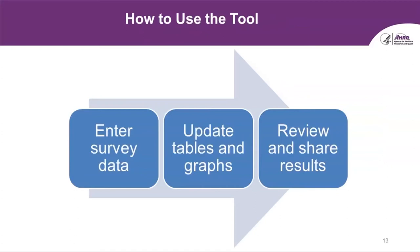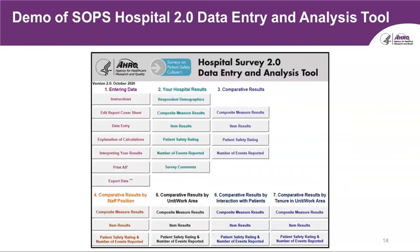So how do you use the tool? It's pretty easy. First, you're going to enter your survey data, then click on a button for updating tables and graphs, and then review and share your results. Today I'm going to demonstrate the SOPS Hospital 2.0 data entry and analysis tool. When you open up this tool, you will see the main menu. Other tools will have similar menus, though the categories may be slightly different. I'm going to share my screen — this may require a little patience as we are doing a live demo.